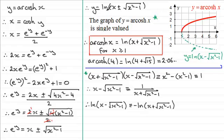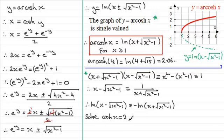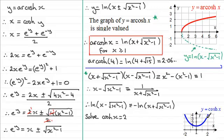Both these solutions were possible, but only the positive one is suitable when we're looking at this single-valued function for the inverse cosh of x. But I'll show you why we need both the plus and minus values in this example. Suppose we had to solve cosh of x equals 2. If we look at the graph of y equals cosh x, there are going to be two values of x where we get 2 — you can see if you take 2 on the y-axis, you get one value across here and one value down there.